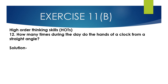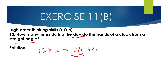Question number 12, higher order thinking skills: How many times during the day do the hands of a clock form a straight angle? A straight angle equals 180°. The hands form a straight angle 2 times every 12 hours, so in a full day: 12 multiplied by 2 equals 24 times. The answer is 24 times.